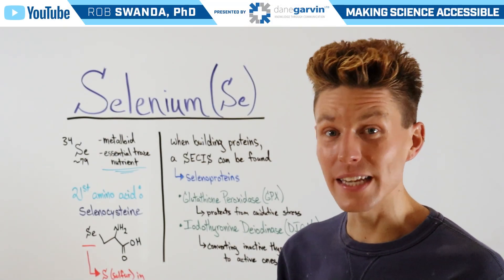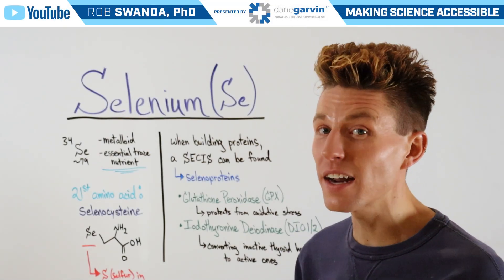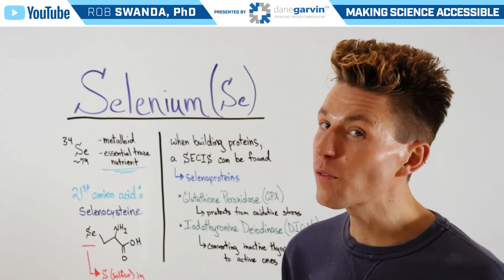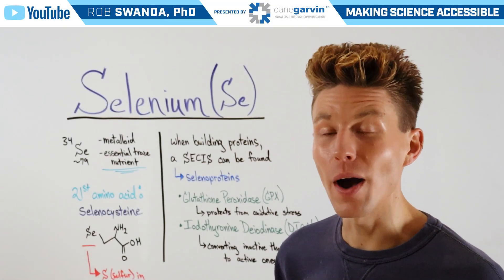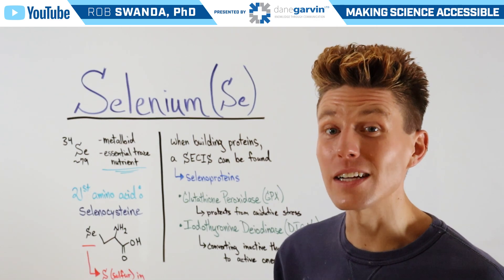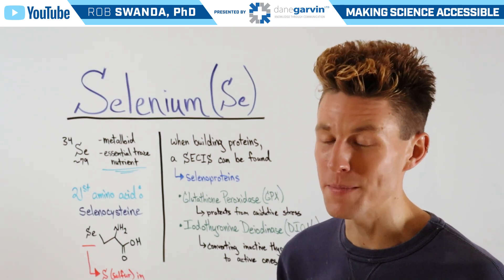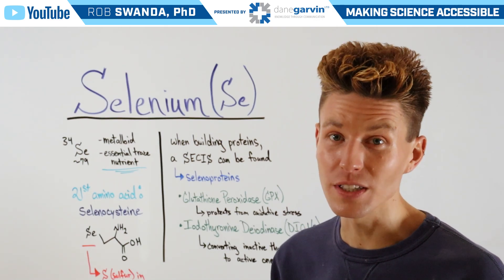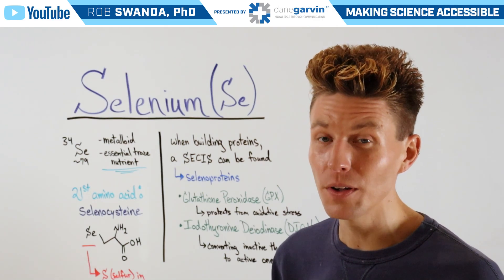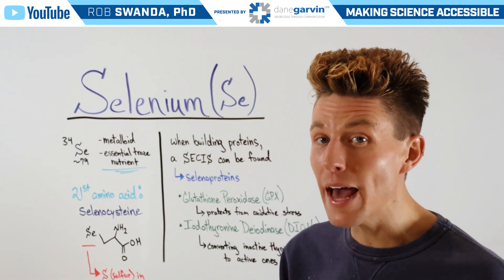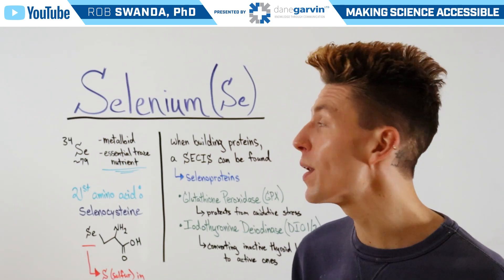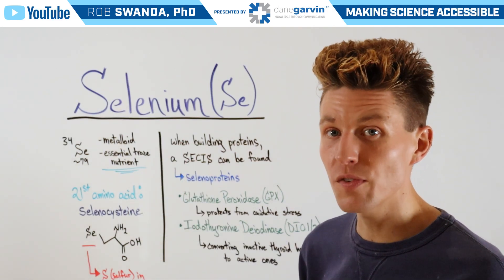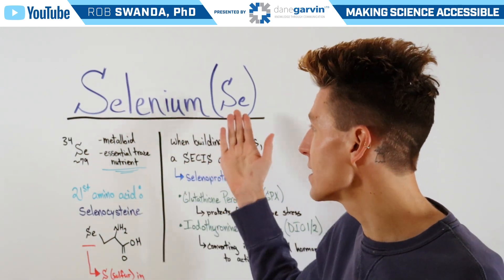We've already talked about essential and non-essential amino acids, and for today's video I want to highlight a 21st amino acid. But before we do that, we have to turn to the periodic table and talk about an element known as selenium, which is abbreviated as Se.